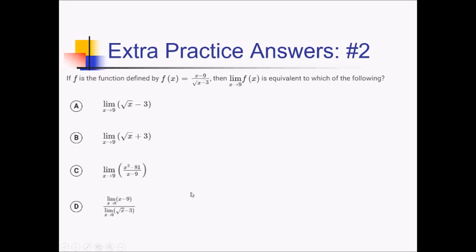So they're asking us to do some kind of algebraic manipulation so that when I plug in 9 again, I'm not going to get 0 over 0. Looking at the answer choices, there's a trick here: we've got a radical in the denominator, and we don't like radicals in the denominator. The only way to get rid of them when you have two terms is by multiplying the numerator and denominator by the conjugate of the denominator. So I'm going to multiply numerator and denominator by radical x plus 3.